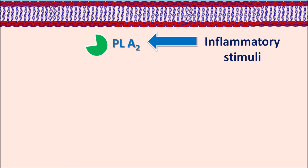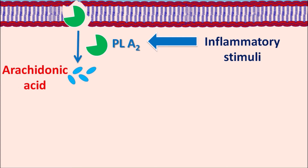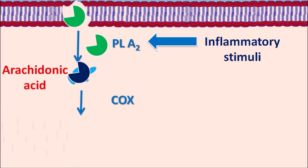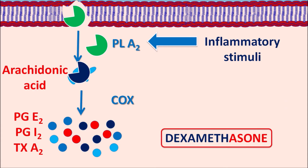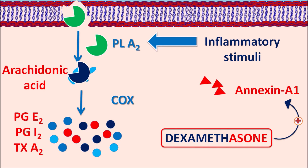Dexamethasone promotes gene transcription of anti-inflammatory agents and suppresses gene transcription of inflammatory mediators. During inflammatory stimuli, the enzyme phospholipase A2 is activated. This enzyme cleaves the phospholipid membrane to release arachidonic acid, a C20 fatty acid, which is converted into prostanoids via the COX pathway. The COX enzyme acts on arachidonic acid to release prostaglandins such as PGE2, PGI2, and thromboxane A2, all responsible for the inflammatory cascade. Dexamethasone stimulates annexin A1, which inhibits phospholipase A2 activity and also inhibits COX enzyme gene transcription, thereby controlling the inflammatory response at both nuclear and molecular levels.